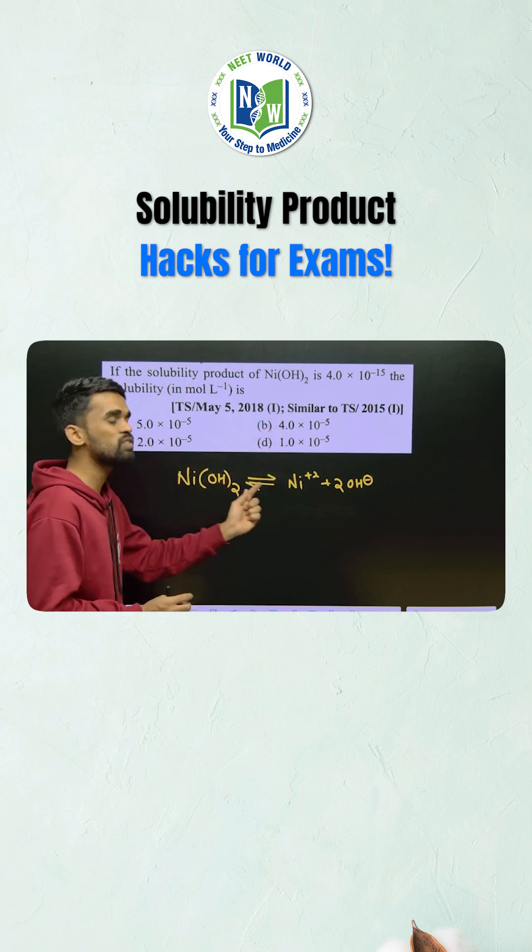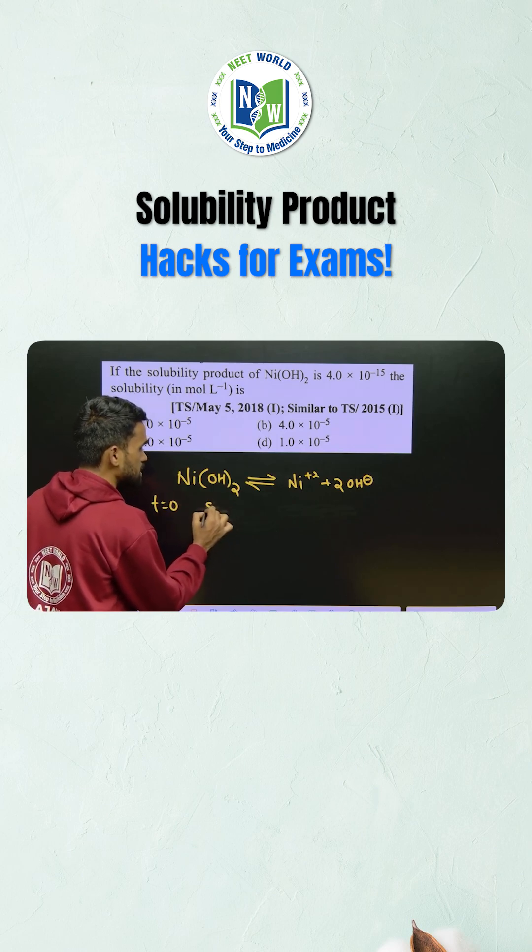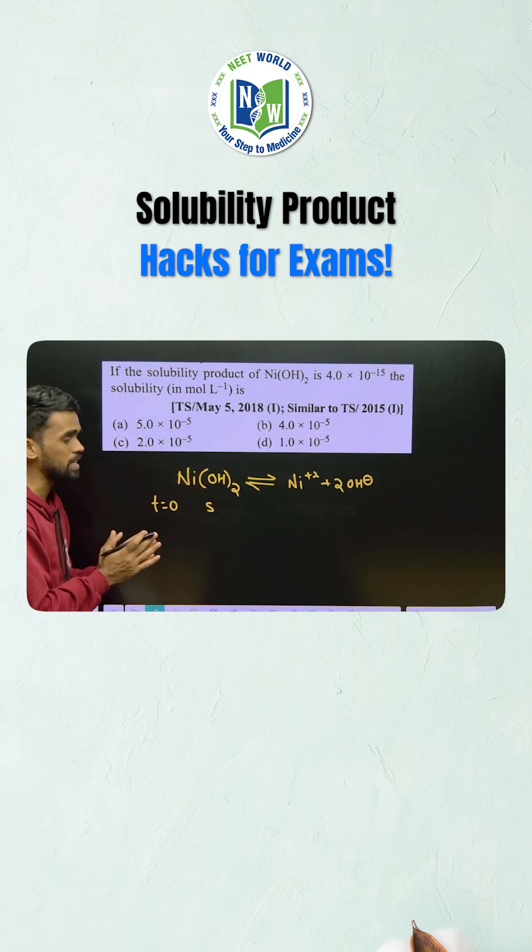Very simple. Write the equilibrium reaction and consider the solubility of this particular compound initially that is S, that will be the concentration I can say here.